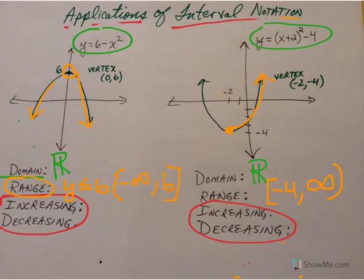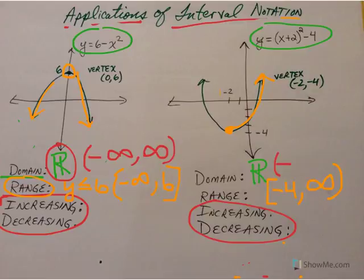And the graph goes up forever, so that is positive infinity. And in my previous video, I communicated and explained why you never put brackets on infinity. It's illogical. Going back to my domain here, I forgot to write that in interval notation. The symbol for all real numbers is double bar R, but in interval notation, it would be negative infinity to infinity.